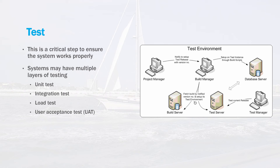There have been a number of high-profile failures in large system development projects that have encountered problems when the system was rolled out under full load conditions. Perhaps the most famous is the U.S. government's rollout of the healthcare software, which saw many frustrated users trying to use a system that performed poorly under high load conditions. Fixing this after the fact was a lengthy and expensive process. If you can simulate a load before it goes into production and ensure that it will work properly, it will save your users a lot of frustration and also save your project a lot of money.